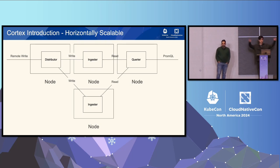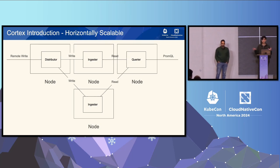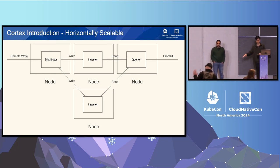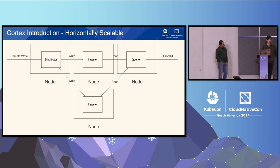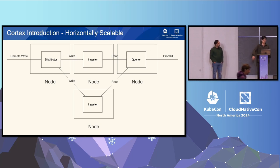For example, in a single Prometheus instance, once it's no longer able to manage your metrics, you'd have to spin up another Prometheus and manually decide which metrics each instance manages — it's not obvious. But in Cortex, you just say: I want more ingesters. Add another ingester, and you're done. You want more distributors? Add more distributors. You want more queriers? Add another querier. That's the nice thing about Cortex.